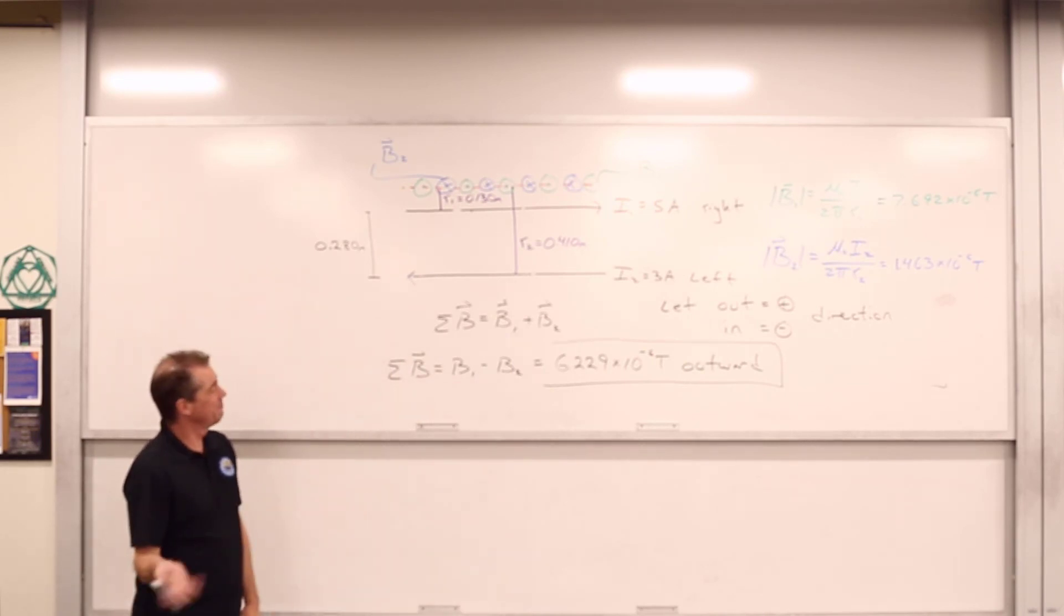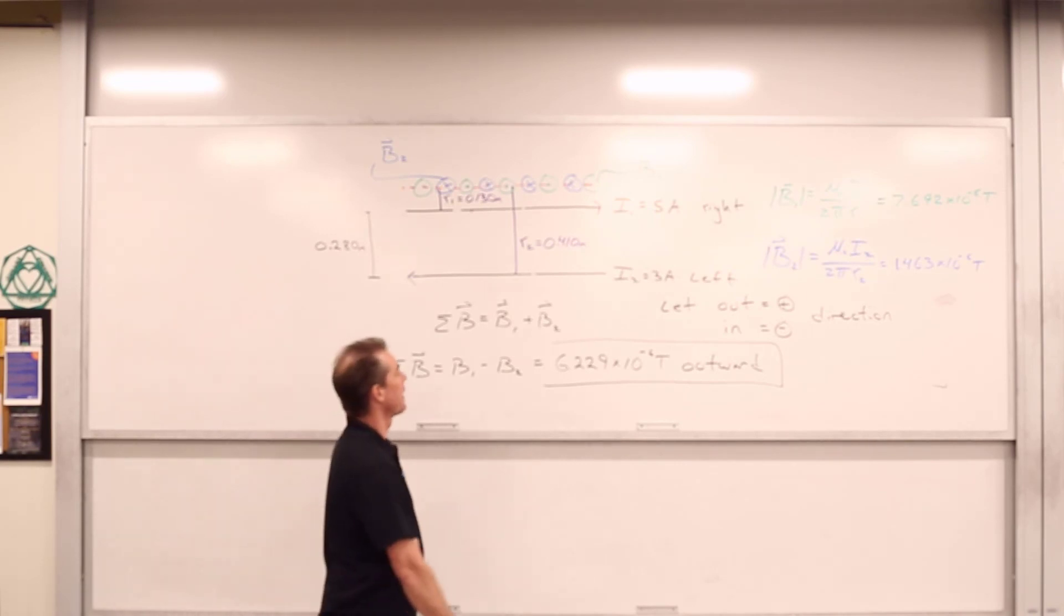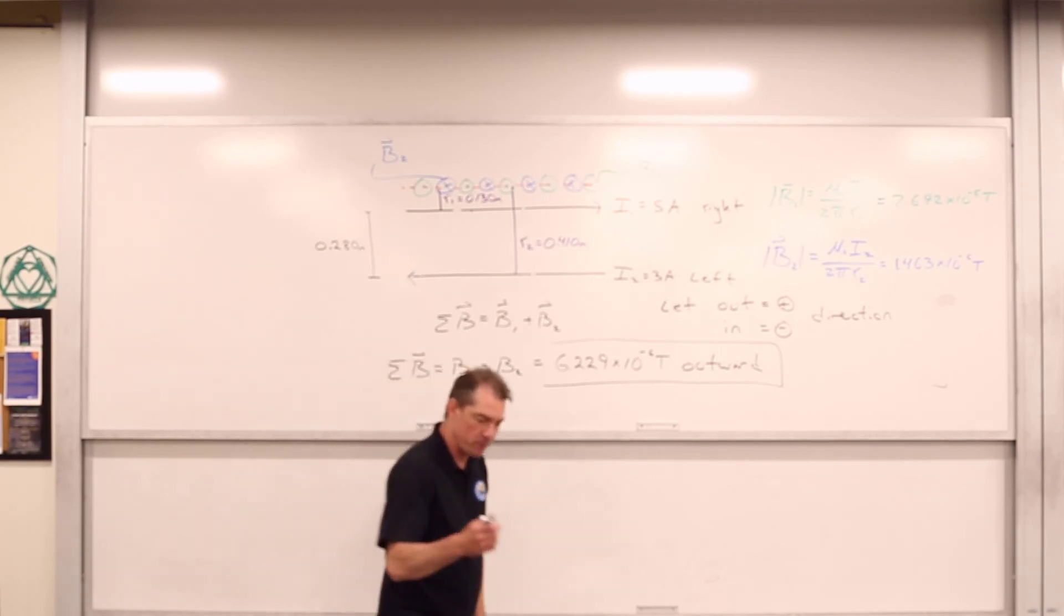So that's basically it. You want to know the net field somewhere? We add up the individual fields, just like we've always done. Now we're just doing it with magnetic fields due to current carrying wires. All right. So that's it. Have a good one.